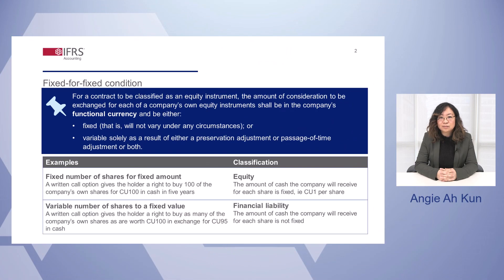When considering the scope of the FICE project, the ISP chose to clarify some of the underlying principles in IAS 32, the accounting standard dealing with the presentation of financial instruments, rather than making fundamental changes to address known practice issues. One of the main sources of accounting challenges in practice relates to the so-called fixed-for-fixed condition for classifying derivatives on own equity.